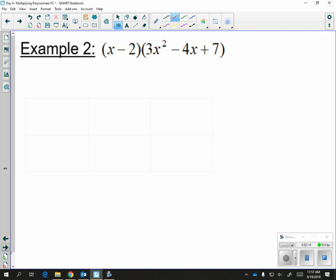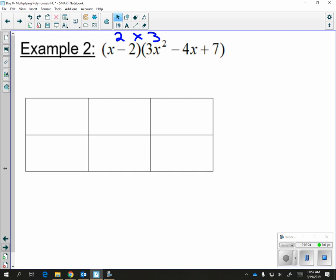For the next example, we have a binomial times a trinomial. So you're going to make a box that is 2x3. Personally, I like to make my boxes 3x2. So what that means is that I like to put the trinomial on top, and I like to put the binomial along the side. It's just my personal preference.